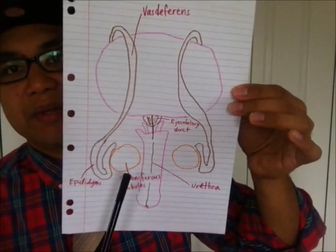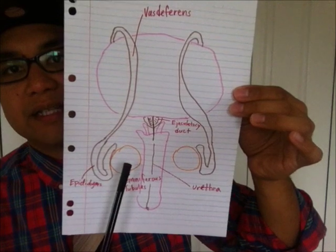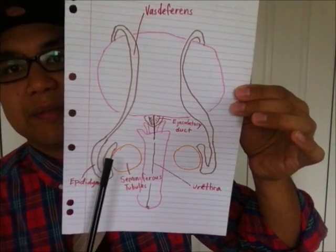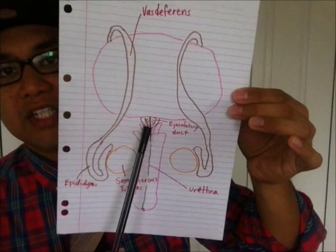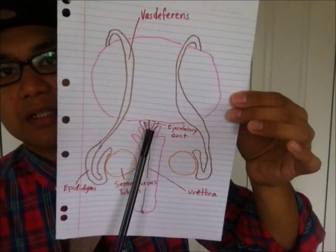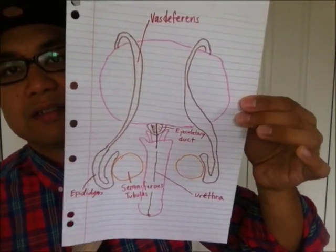So let's go through this again: we have seminiferous tubules, epididymis, vas deferens, ejaculatory duct, urethra. Thanks, James, for such a great question — I'll try to answer it in the next few weeks. The next video will be on the female reproductive system. If you haven't yet, go ahead and subscribe to my channel, and I hope to see you soon.